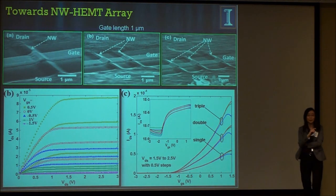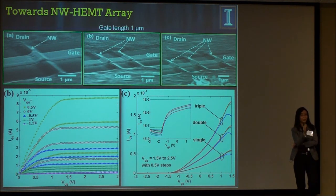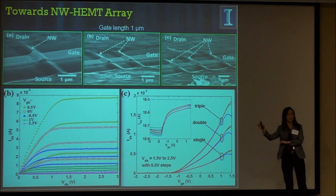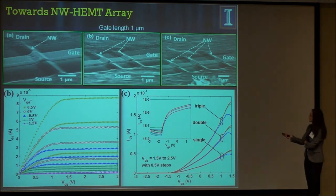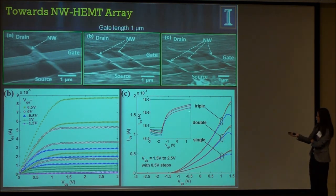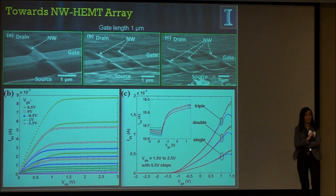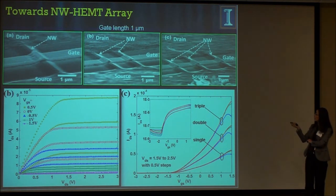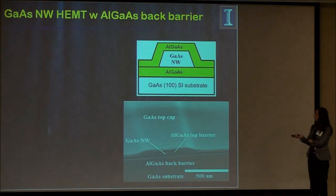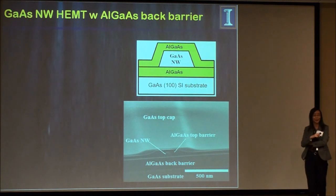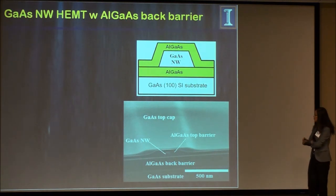To address uniformity, if one wire behaves a certain way, versus a hundred wires, you should be able to simply multiply the output current by the number of wires. This is illustrated with three wires — they indeed scale very well. This is a three-wire channel with a one-micron gate length. The wire is also relatively large, but it serves as a good illustration of uniformity. We take comfort in that we can tap scalability in terms of electrical characteristics also.